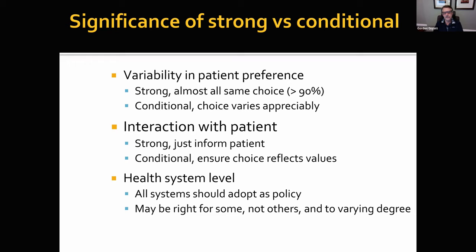WHO recommendations are oriented in two ways: for the interaction between the clinician and the patient, and at a health system level. A strong recommendation at the health system level would mean all systems should adopt this as policy. A conditional recommendation means it may be right for some but not others, or right to a varying degree under particular conditions.